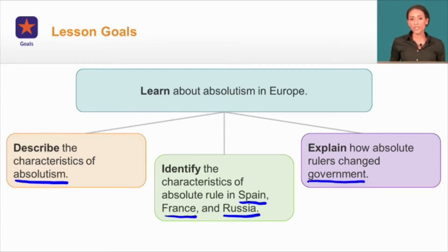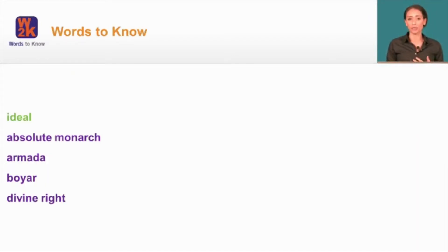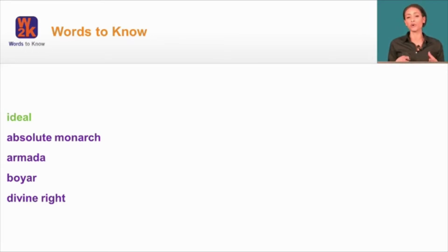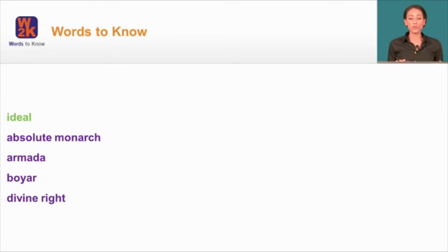Throughout this lesson, you're going to hear some key vocabulary terms. These words fall into two categories: an academic word you might hear in other lessons or disciplines, and four key words focused on this lesson. At any time, if you need to review these words or refresh the definition, just click on that word and a glossary will help you out.